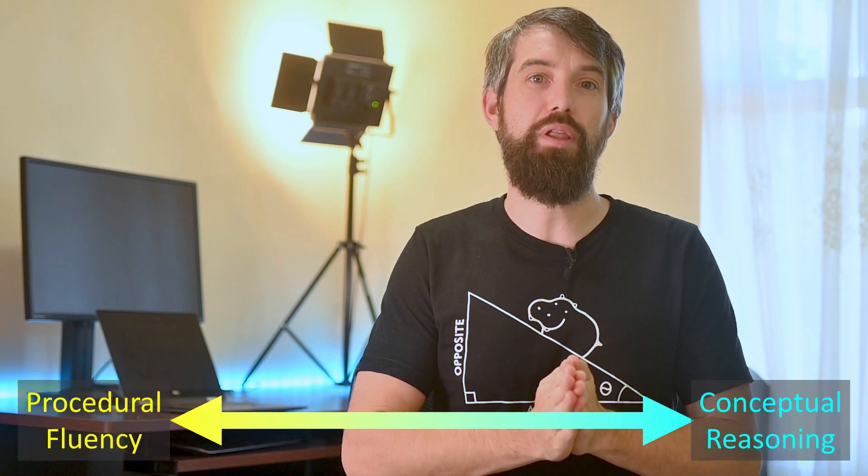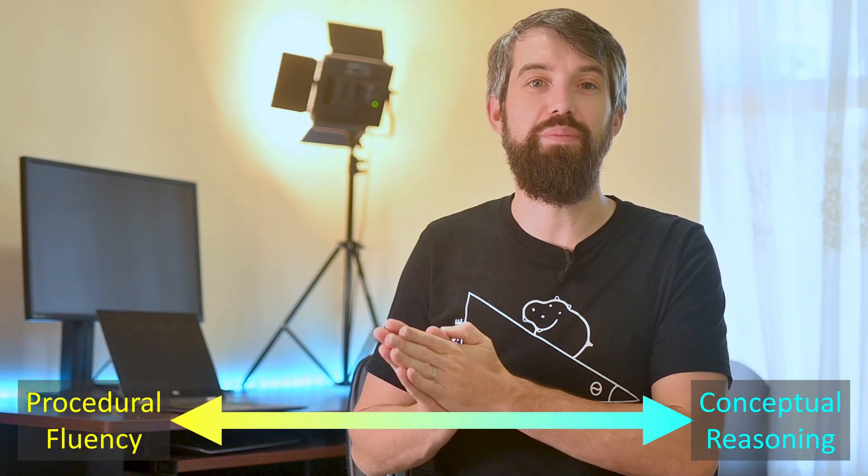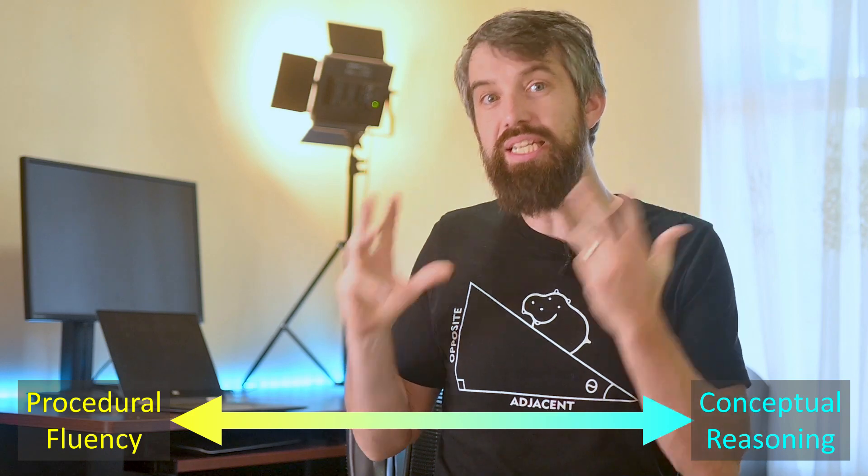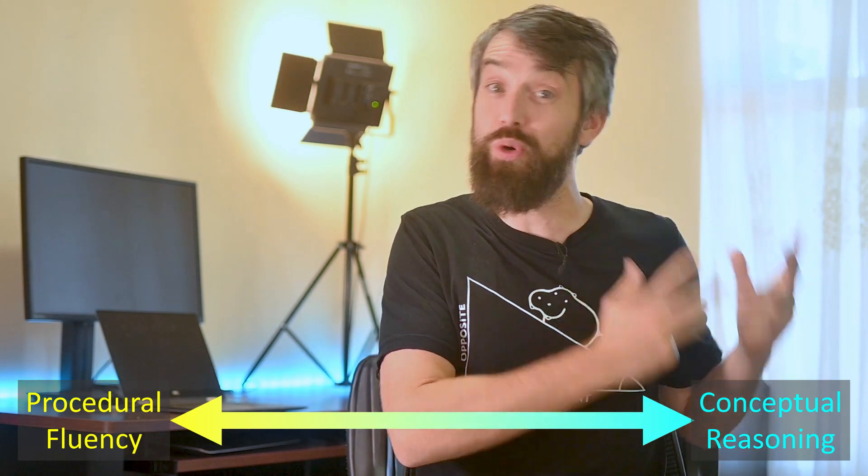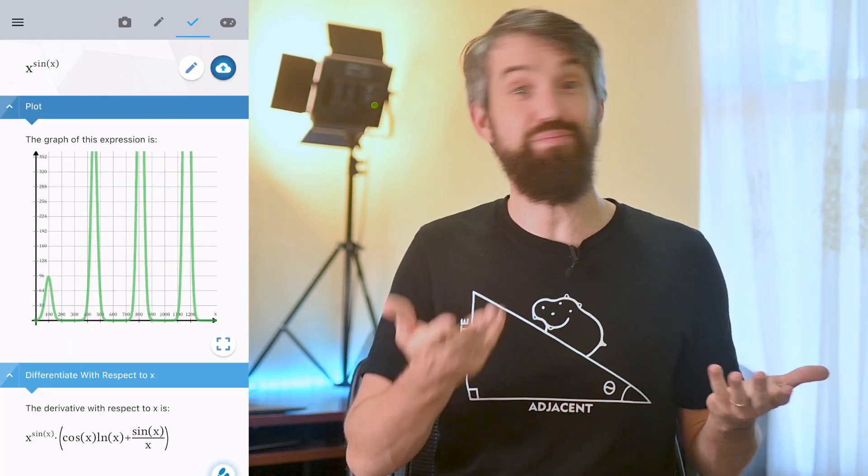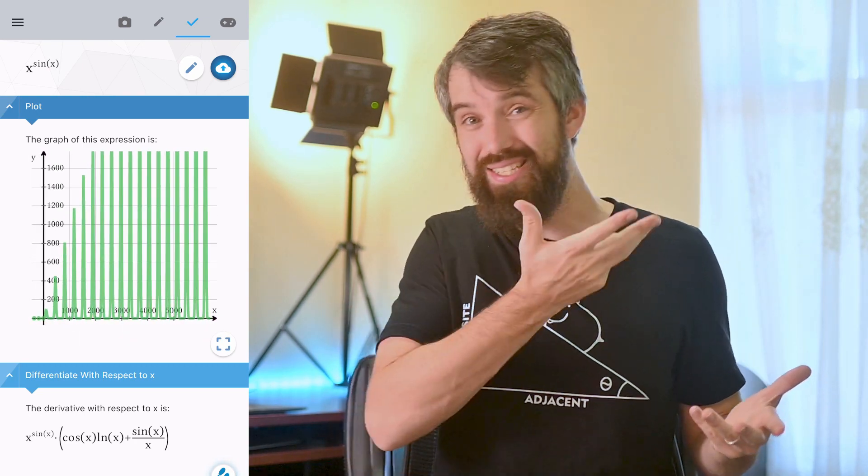Okay, so what was really going on that led to so many students screwing up this particular problem? First, I want to acknowledge that this problem is way off on the side of a spectrum that I sometimes label procedural fluency through to conceptual reasoning. That is, this is the problem where there's a procedure and you need to know and execute the procedure, but you don't need to know a lot about the conceptual ideas of what is a derivative, and what does it look like.